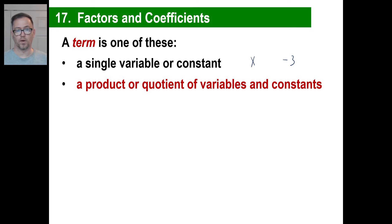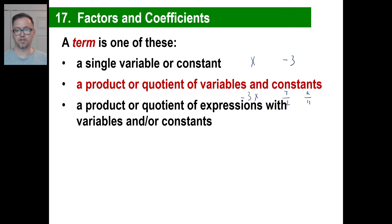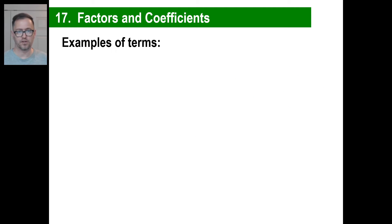It could be a product or a quotient of variables and constants. In other words, it could be negative 3x, or it could be 7 divided by 2, or it could be a divided by 11. That's a term. It could be a product or a quotient of expressions with variables and or constants. It's just basically another way to say term is just a single algebraic item. It's a thing. Terms get added and subtracted, and you'll be able to look at an expression and tell how many terms there are.